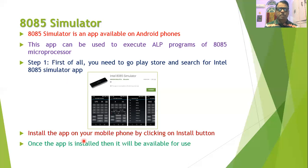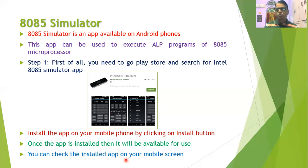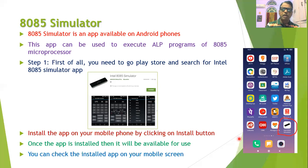Once the app is installed on your mobile phone, you will find it on the installed apps or on the home screen of your mobile. You can verify whether the app is installed by checking the screen of the mobile, and then you can make access to this app.